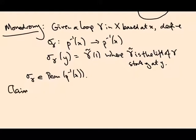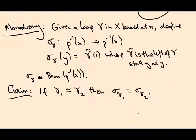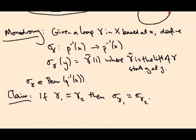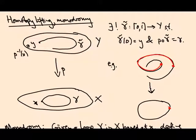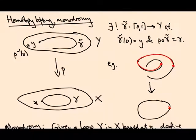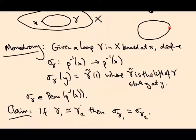So, claim: if gamma 1 is based homotopic to gamma 2, then sigma gamma 1, the permutation, equals sigma gamma 2. So to prove this, I'm going to need another lifting property called the homotopy lifting property of covering spaces. So I'm going to prove the homotopy lifting property, and then it'll be up to you to figure out why that implies this claim.